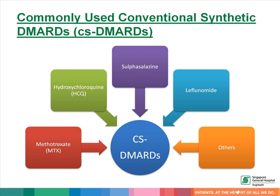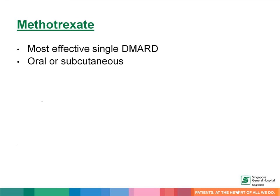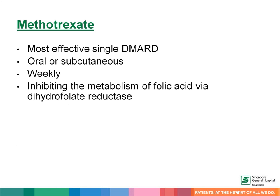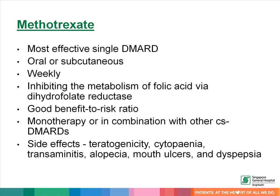Commonly used conventional synthetic DMARDs include methotrexate, sulfasalazine, hydroxychloroquine, and leflunomide. Methotrexate is the most commonly used DMARD in rheumatoid arthritis and the most effective single DMARD. It is given as an oral tablet or subcutaneous injection on a weekly basis. Methotrexate works by inhibiting the metabolism of folic acid through dihydrofolate reductase. It has a good benefit-to-risk ratio and can be used as monotherapy or in combination. Side effects include teratogenicity, cytopenia, transaminitis, alopecia, mouth ulcers, and dyspepsia.